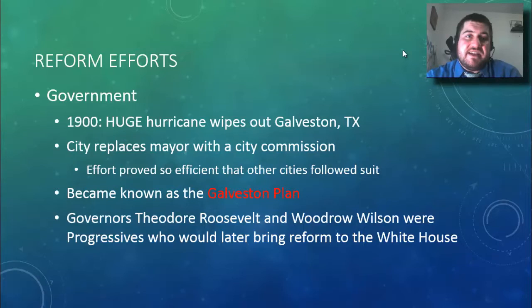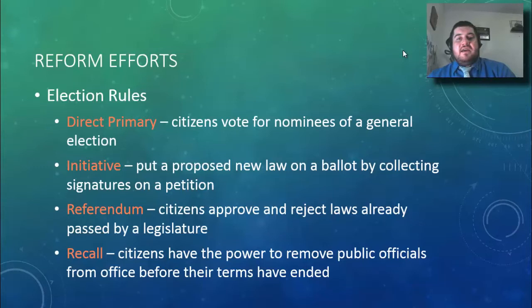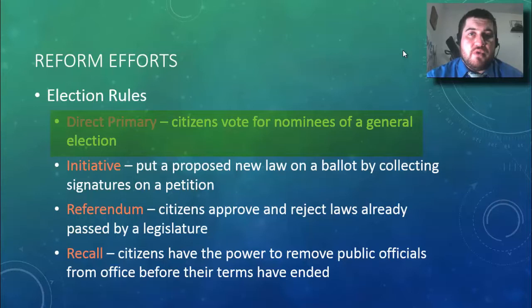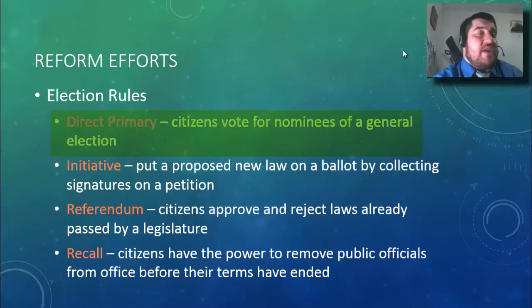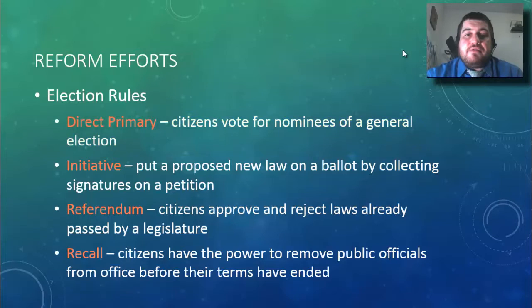There are four types of political reform efforts passed during the progressive era. The first is the direct primary: party officials used to pick who would run in the general election, but now voters get to vote for which candidate they want from a pool of candidates — we get to pick, they don't anymore.